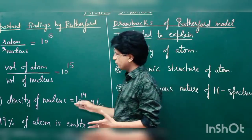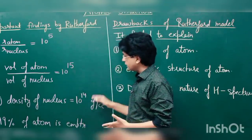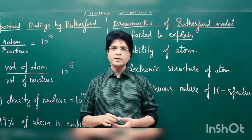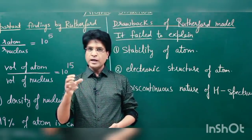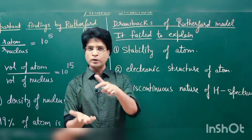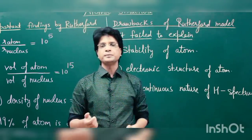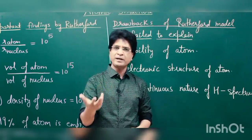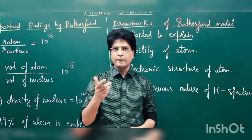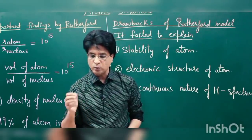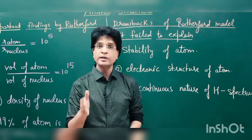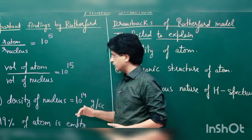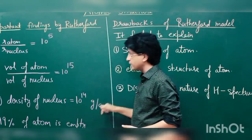He also concluded that the density of the nucleus is a staggering 10 to the power of 14 grams per cc. I'll tell you a story — when I was in 10th class, my chemistry teacher asked me to lift a bottle filled with mercury. I expected it to be light like water or acid, but I couldn't even move it. The reason: mercury's density is 13.6 grams per cc. The density of the nucleus is 10 to the power of 14 grams per cc — can you imagine that?